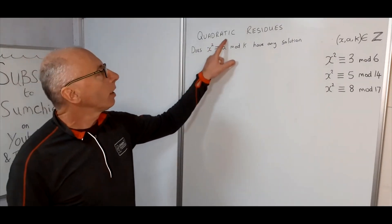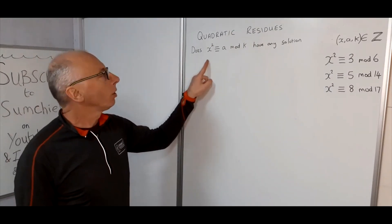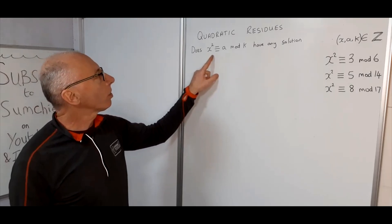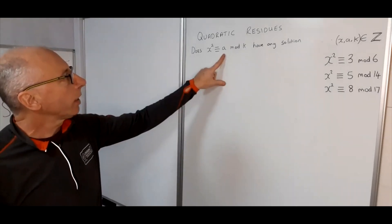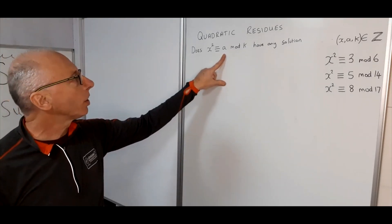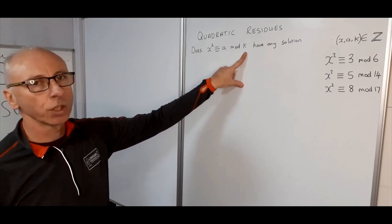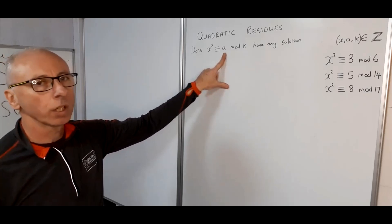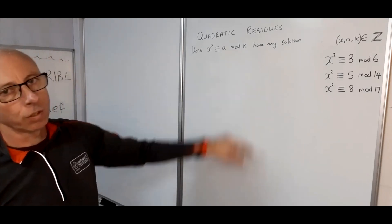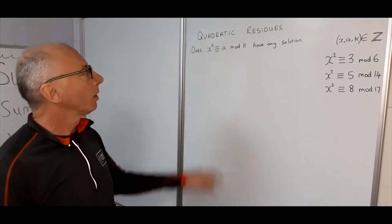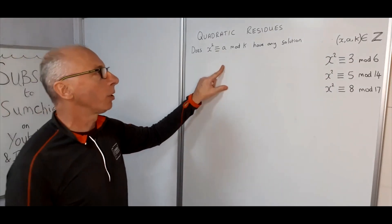We're going to look at number theory and in particular quadratic residues. The question we're asking is: does x² ≡ A (mod K) have any solutions? If A is a quadratic residue of K, it will have a solution. If A is a non-quadratic residue, it will not have a solution modulo K. X, A, and K are all integers in modular arithmetic.